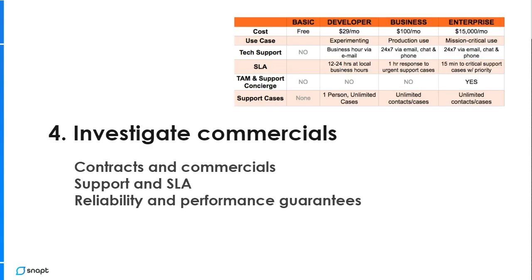That takes us to contracts and commercials between the different clouds. It's very common for large consumers to get better deals by signing contracts, but also the types of support you get per cloud vary significantly. SLAs and fees can scale up a lot — for example, $15,000 a month for 15-minute support. If you've got a five-nines SLA guarantee, you need 15-minute support, so you need to account for that. And as we saw, 27% of clients haven't had an outage this month in public cloud — so the SLA implications are real.